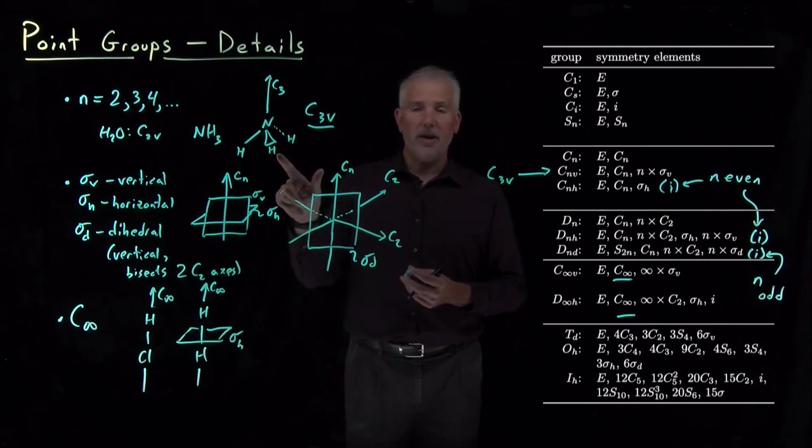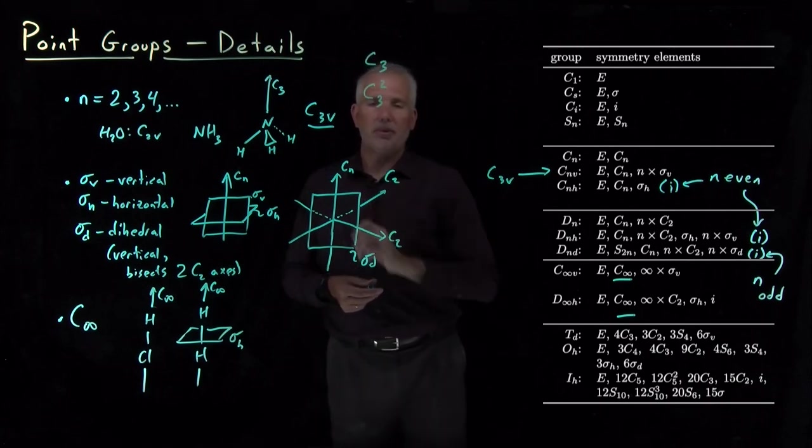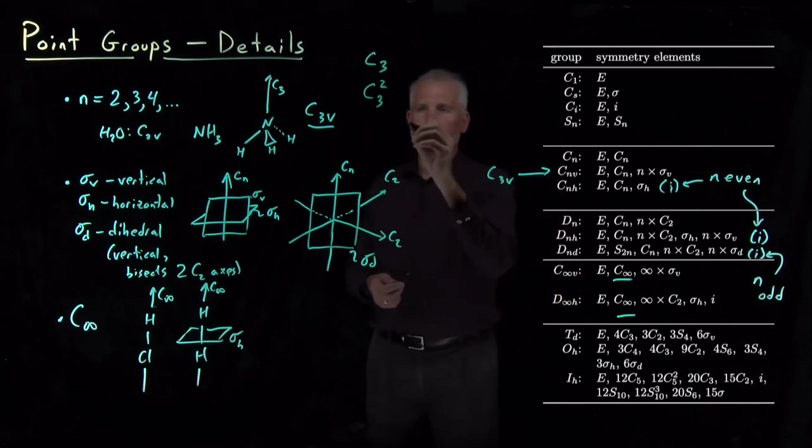It needs to be there as the inverse of the C3 rotation, so that we have a C3 rotation. We also have a C3 rotation that happens twice, or if you prefer, a C3 operation that happens in the opposite direction.